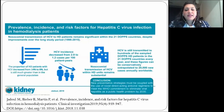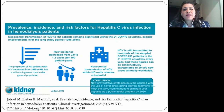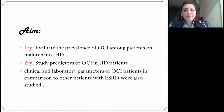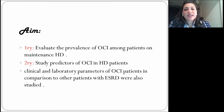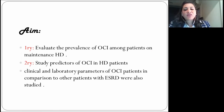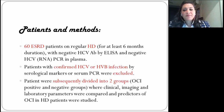Il est bien connu que les patients hémodialysés courent un risque accru d'infections pour l'hépatite C chronique en raison des infections nosocomiales, de l'accès vasculaire et des transfusions sanguines. C'est pourquoi dans notre étude nous visons à évaluer la prévalence d'infections occultes à l'hépatite C chez les patients sous hémodialyse d'entretien. Notre second objectif est d'étudier les prédicteurs d'infections occultes à l'hépatite C en comparant les paramètres cliniques et de laboratoire entre les patients présentant une infection occulte et les autres patients atteints d'insuffisance rénale en phase terminale.